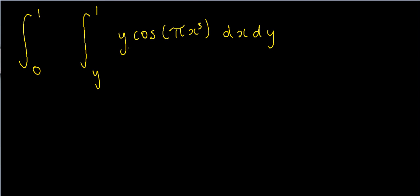We're asked to integrate the function y times the cosine of pi x cubed with respect to x and with respect to y. Notice that we're asked to integrate with respect to x first, because we've got a dx here. The limits are x has to vary from y to 1, so it's going to start at y and end at 1. And for y I've got to start at 0 and end at 1.